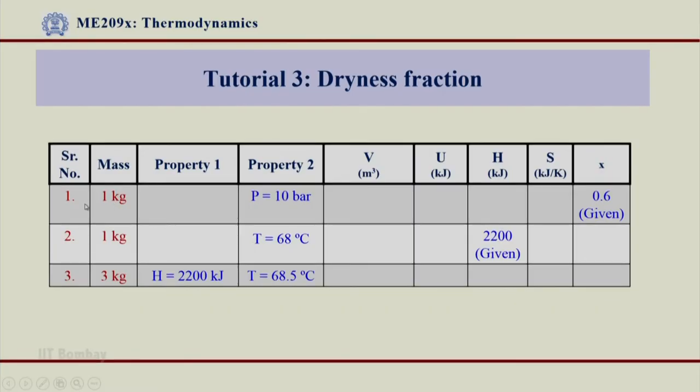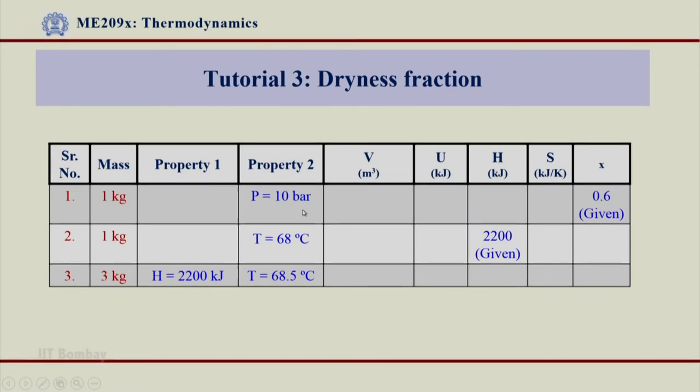Let us come to the question. The first question is mass is given, one property is 10 bar and x has been given as 0.6. These two parameters have been given, we will have to find out the values of V, U, H and S. Let us go to table number 2 and locate pressure equal to 10 bar and find out the properties at that particular location.